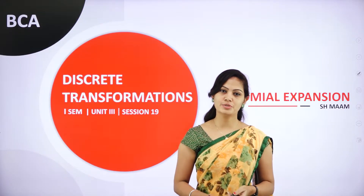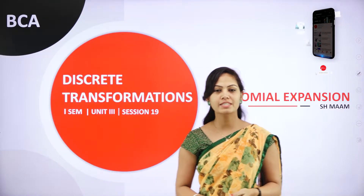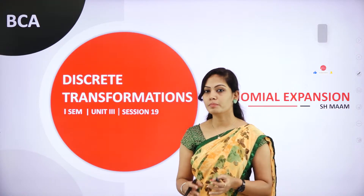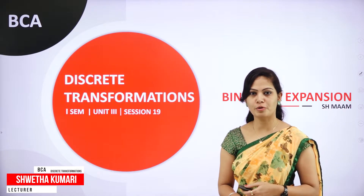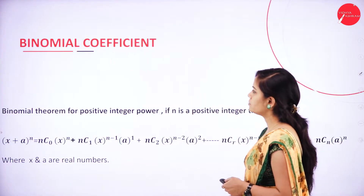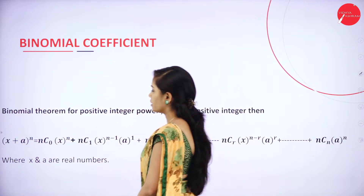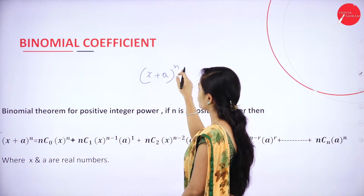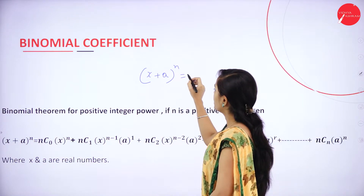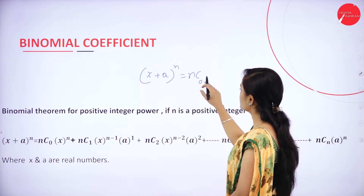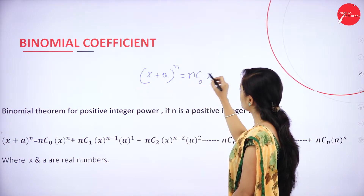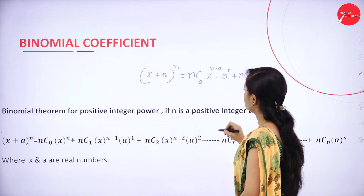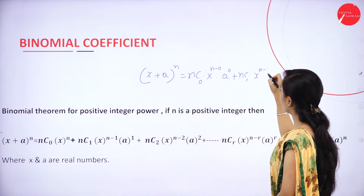Hello everyone, welcome back to my new session. I am Shweta, computer science faculty. In my previous session I started binomial coefficient — a way of picking an unordered list of elements. Today I will explain some other important binomial expansion problems. The binomial theorem for positive integer power: if n is a positive integer, x plus a power n — what is the expansion? nc0 starts from initial value 0, nc0 into x power n minus 0 into a power 0, plus nc1 and x power n minus 1, a power 1.